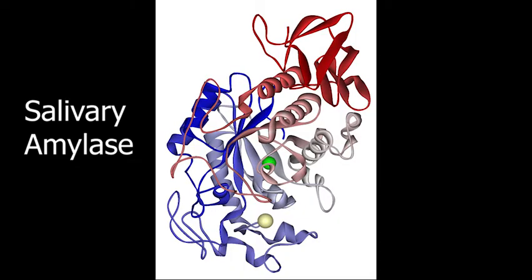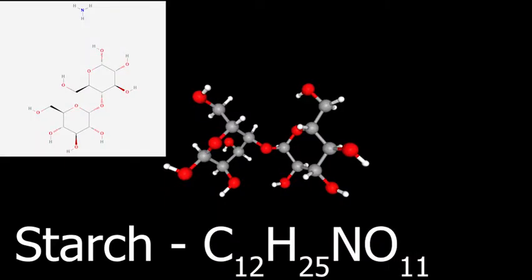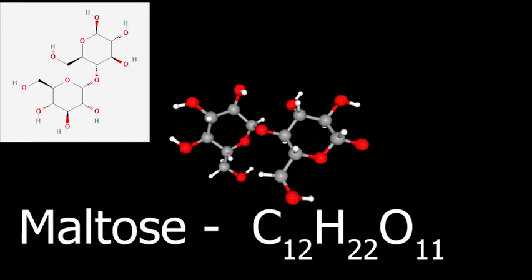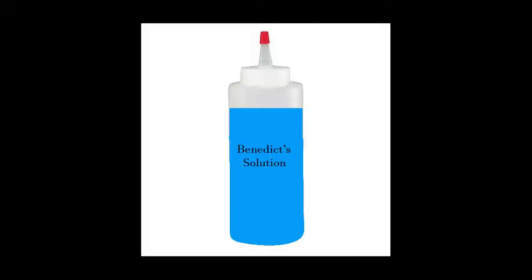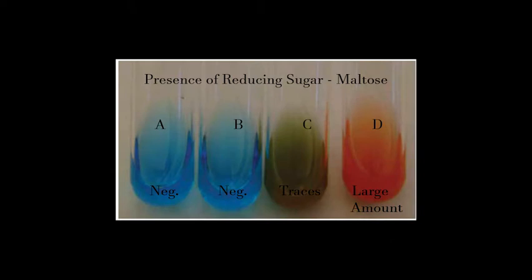Salivary amylase speeds up the hydrolysis, or digestion, of starch into molecules of a reducing sugar such as maltose. Whenever Benedict solution and maltose are heated in a test tube, a color change from blue to green, from green to yellow, from yellow to orange, from orange to brown, from brown to a brick red color occurs depending on the concentration of maltose.